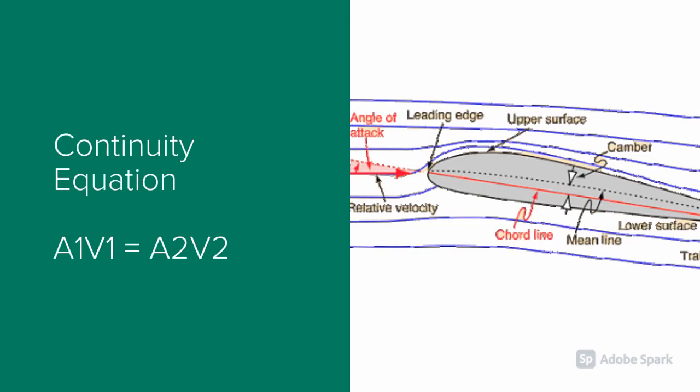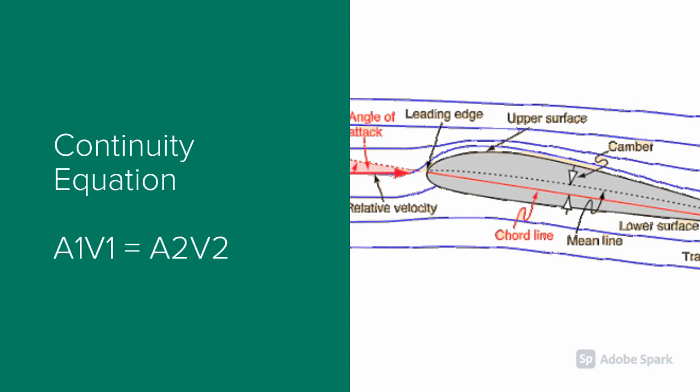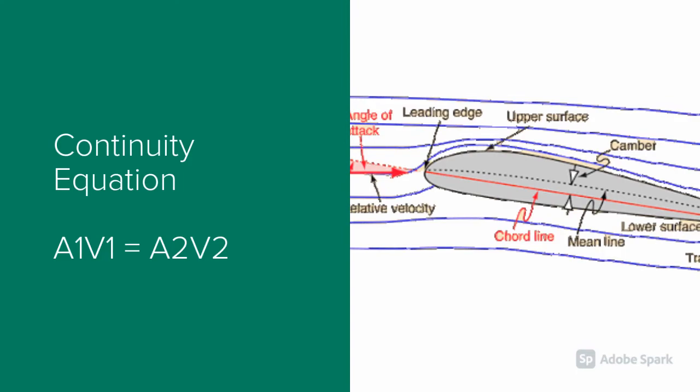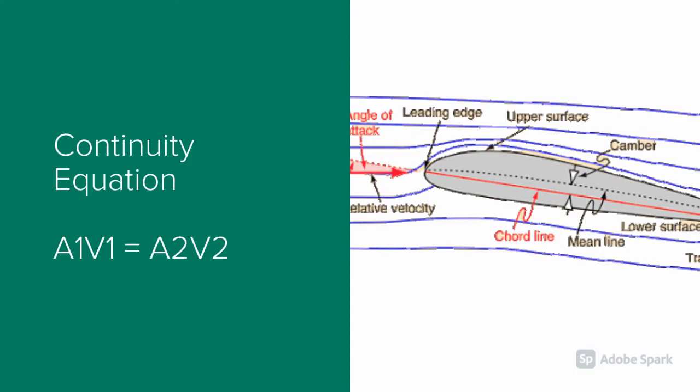The continuity equation tells us that a flow squeezed into a smaller area must increase in velocity and the Bernoulli equation tells us that when a flow moves faster it creates a lower pressure. Thus a higher pressure exists on the lower surface of an airfoil and an increase in speed on the upper level where the flow is being brought closer together.